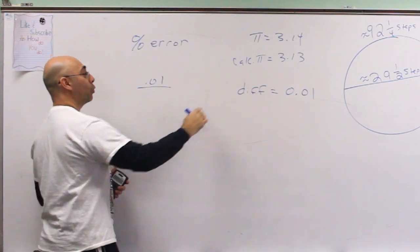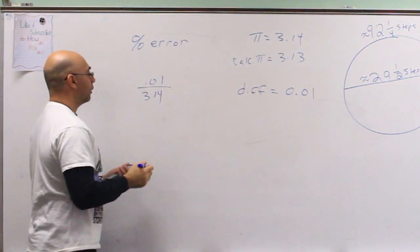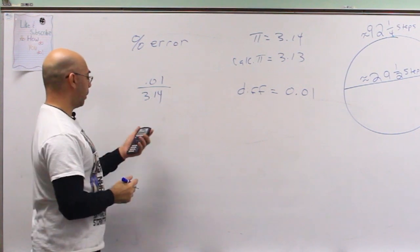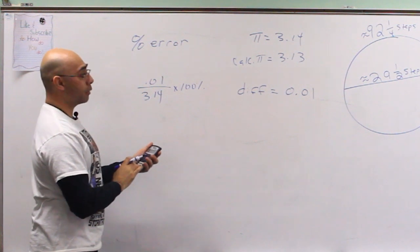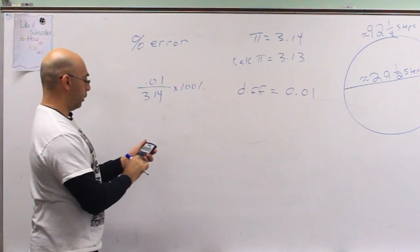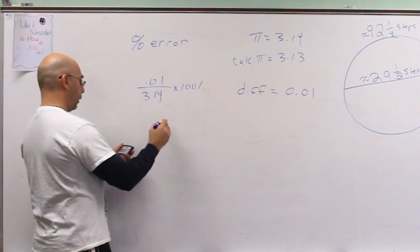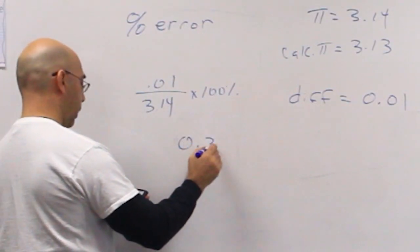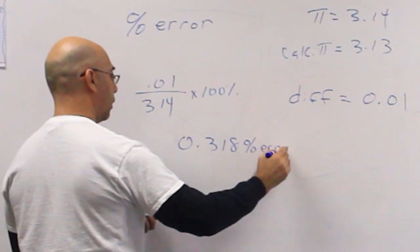I divide by 3.14 and multiply by 100 percent to get my percent of error. So 0.01 divided by 3.14, then multiplied by 100, gives me 0.318 percent error.